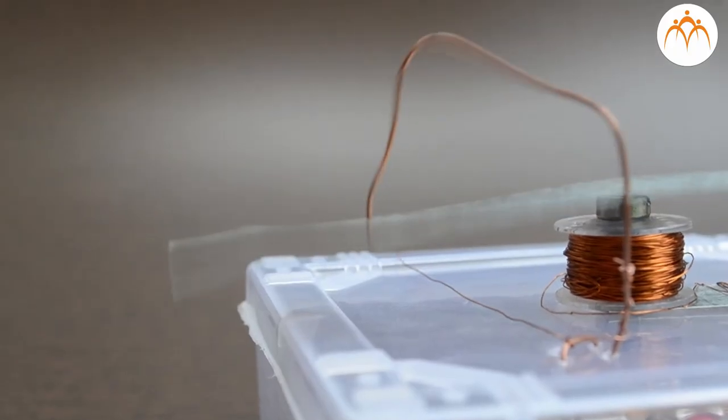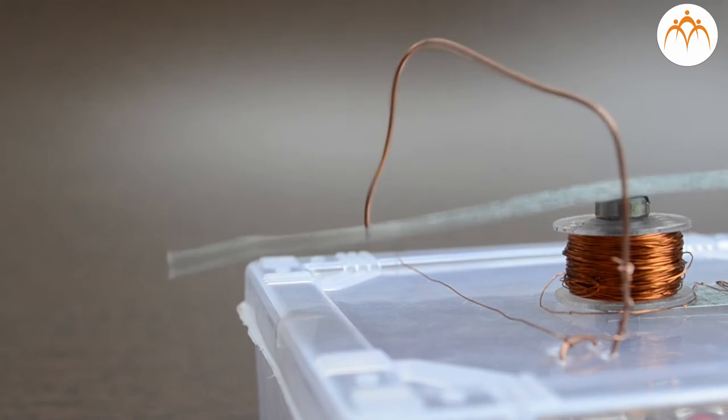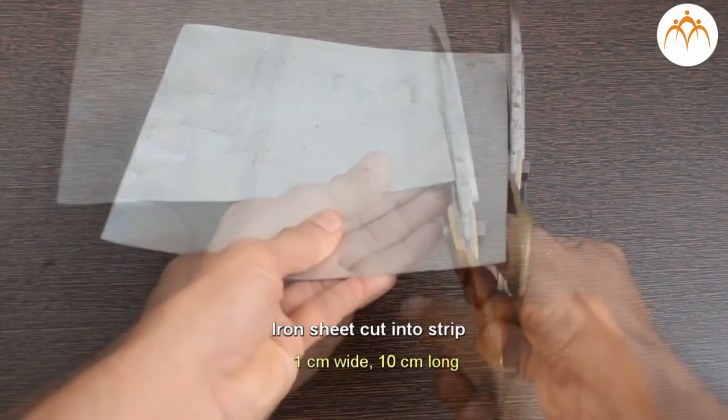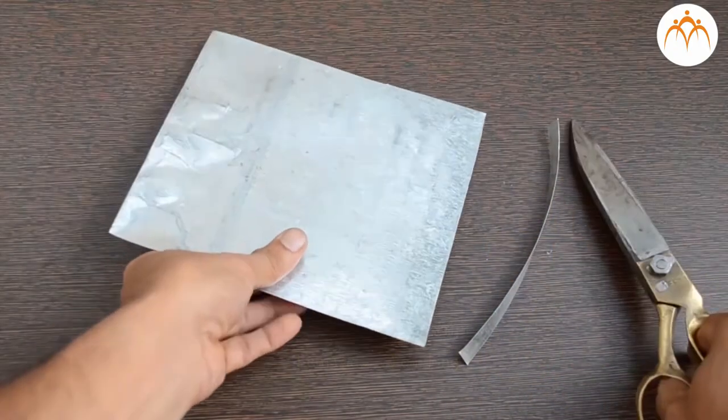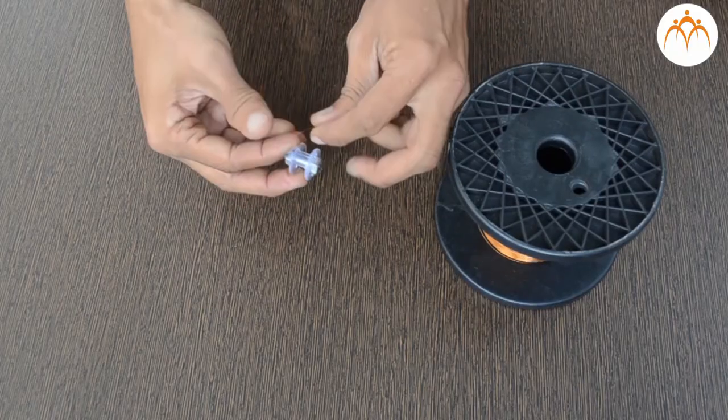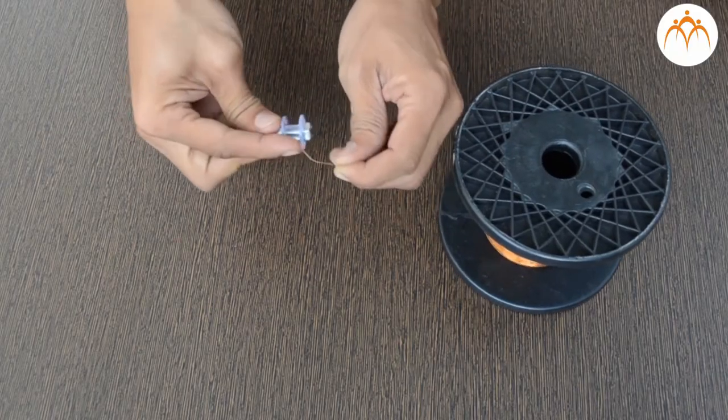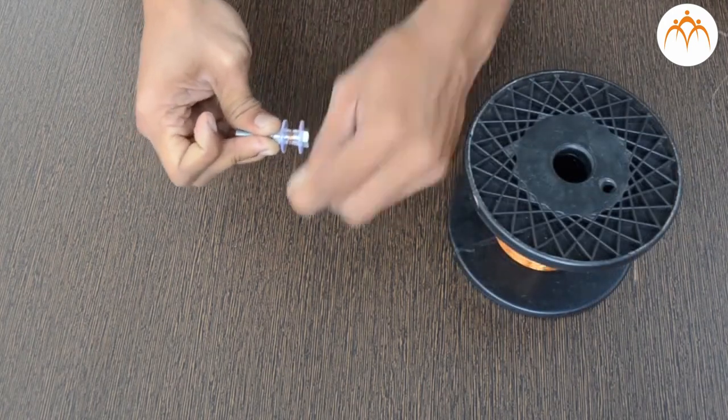We can build an electric bell which is based on an electromagnet. Thin galvanized mild steel sheet is cut into strips. A plastic bobbin used in a sewing machine is taken and thin coated copper wire is wound around it.